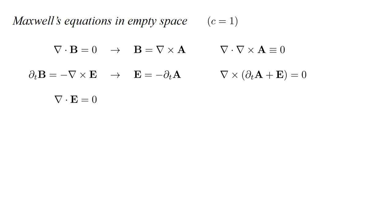A third equation says the divergence of E is zero. Since the divergence of E is minus the time derivative of the divergence of A, this equation is true if the divergence of A equals zero.